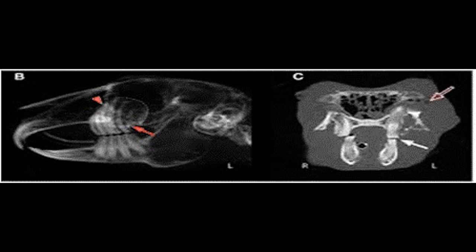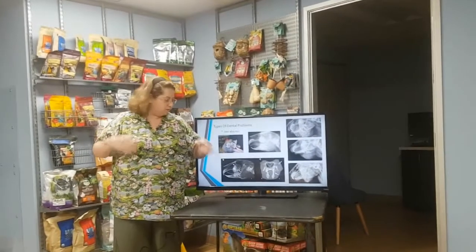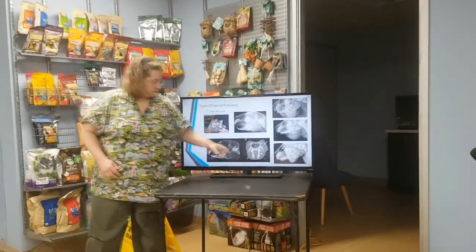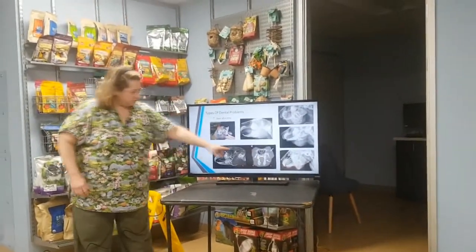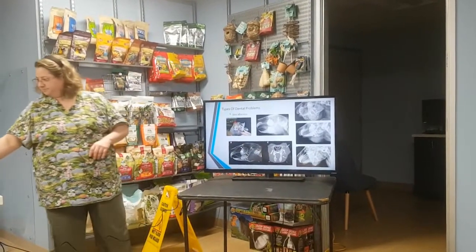These tooth roots are abnormal looking, and on the CT scan the abscess is right here. You can even see that these molars are meeting very horizontally and don't have that normal angle like on the other side. And then this is the nasal cavity, up in that area.